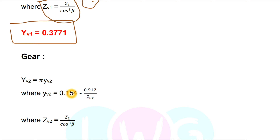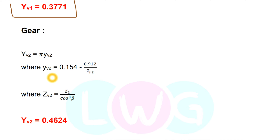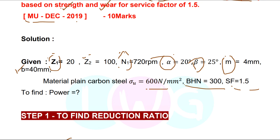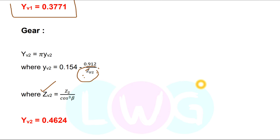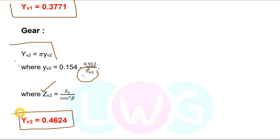For the gear, the same procedure applies. Using the formula zv2 = z2/cos³β (PSG page 8.51), substituting z2 = 100 and β = 25°, we get zv2. Substituting into the Lewis form factor formula for 20° full depth gives yv2 = 0.4624.